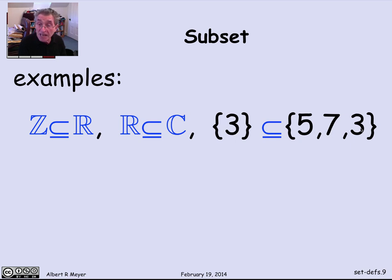In this case, 3 is not a subset of this set on the right. But the set consisting of 3 is a subset of the set on the right. Because after all, the only member of this set is 3. And that is a member of this set.